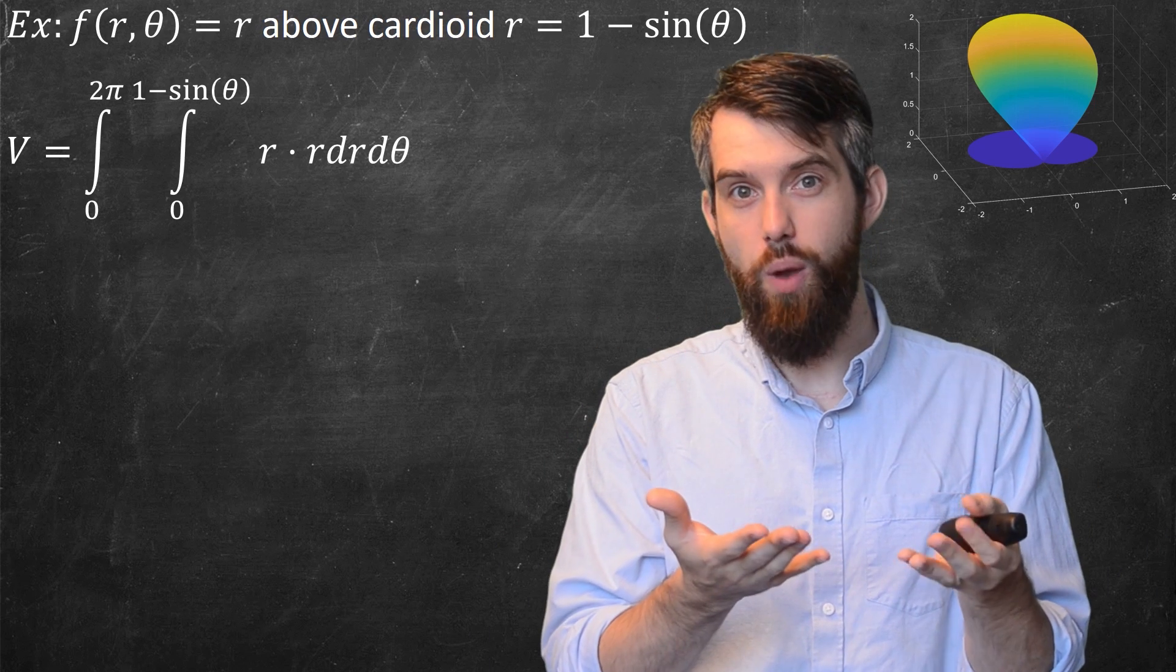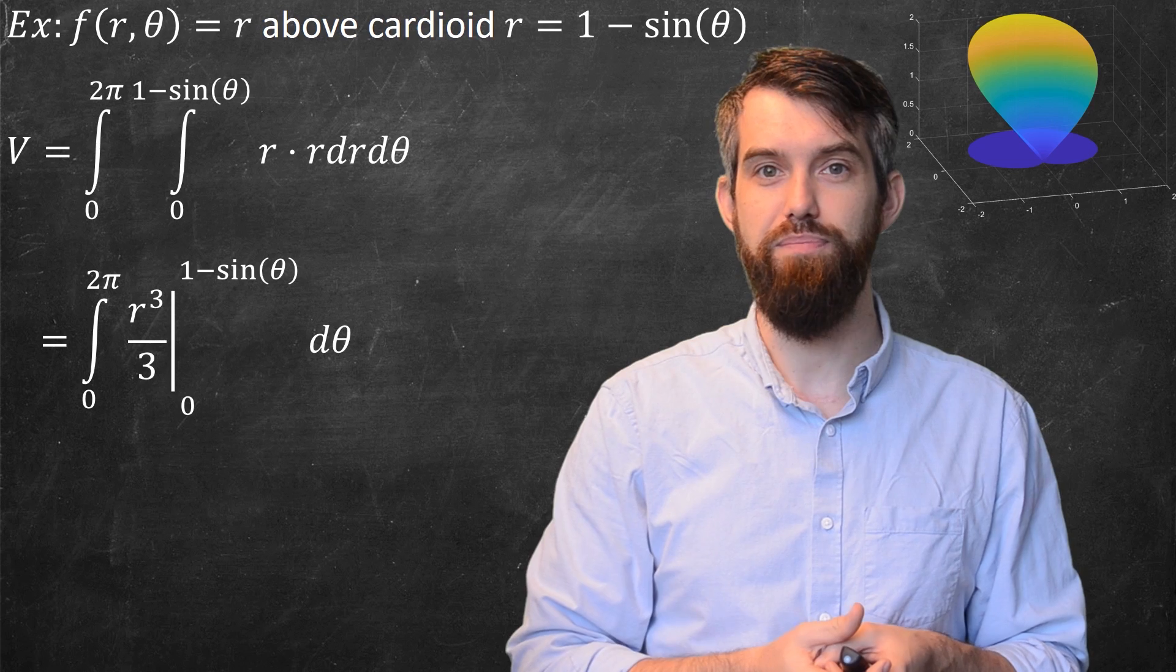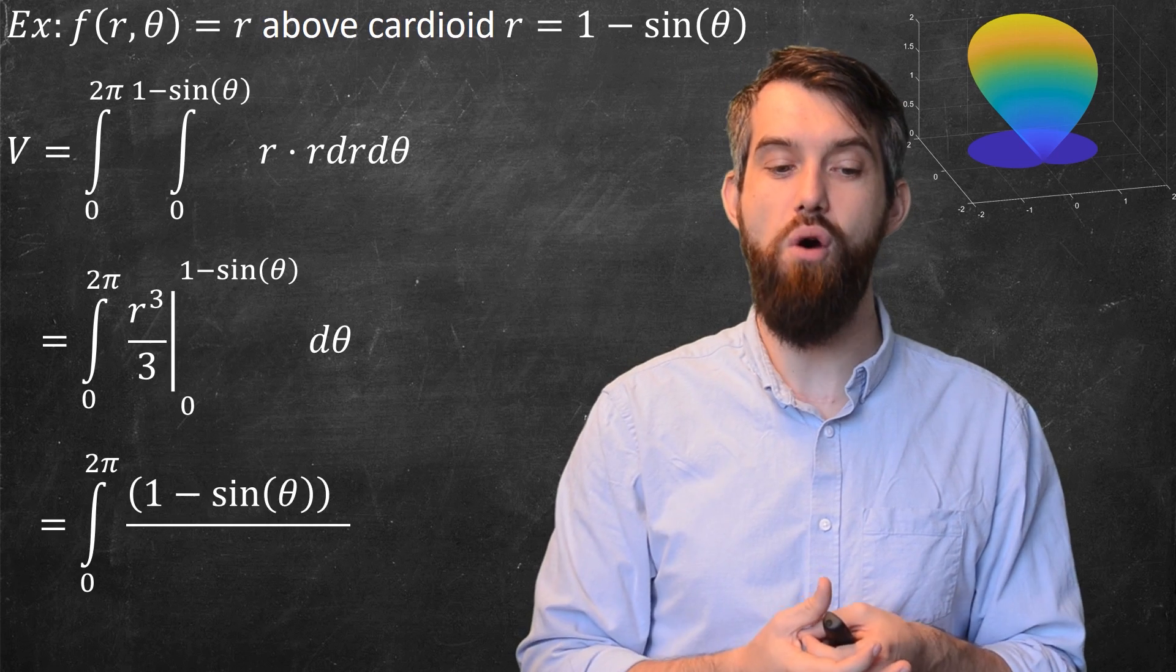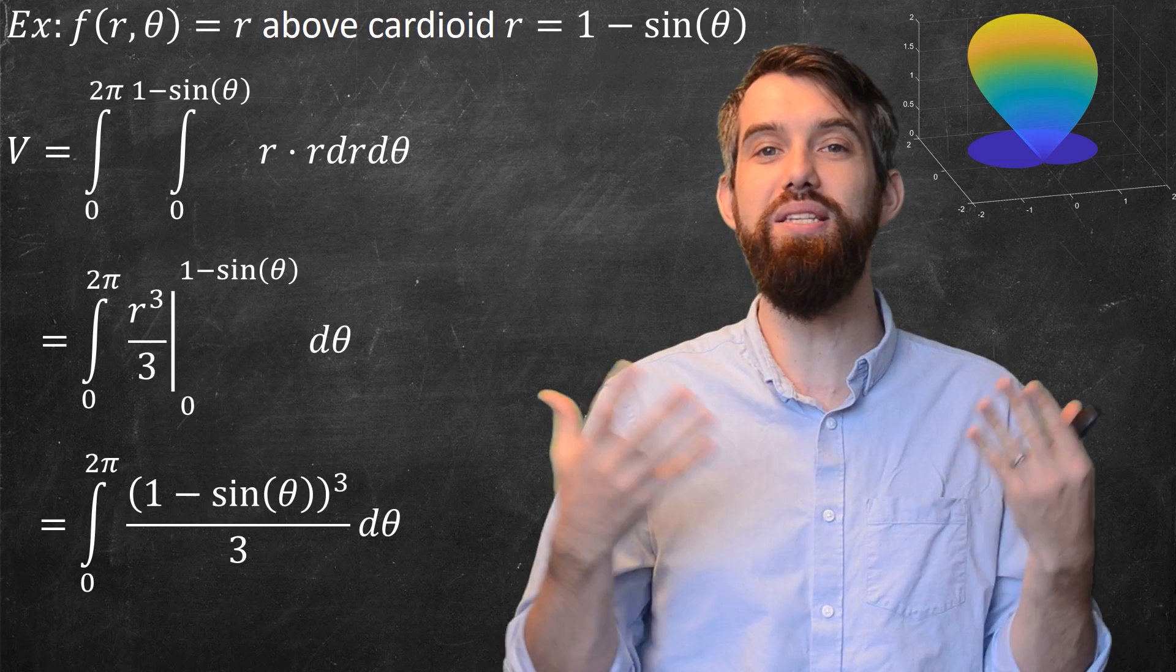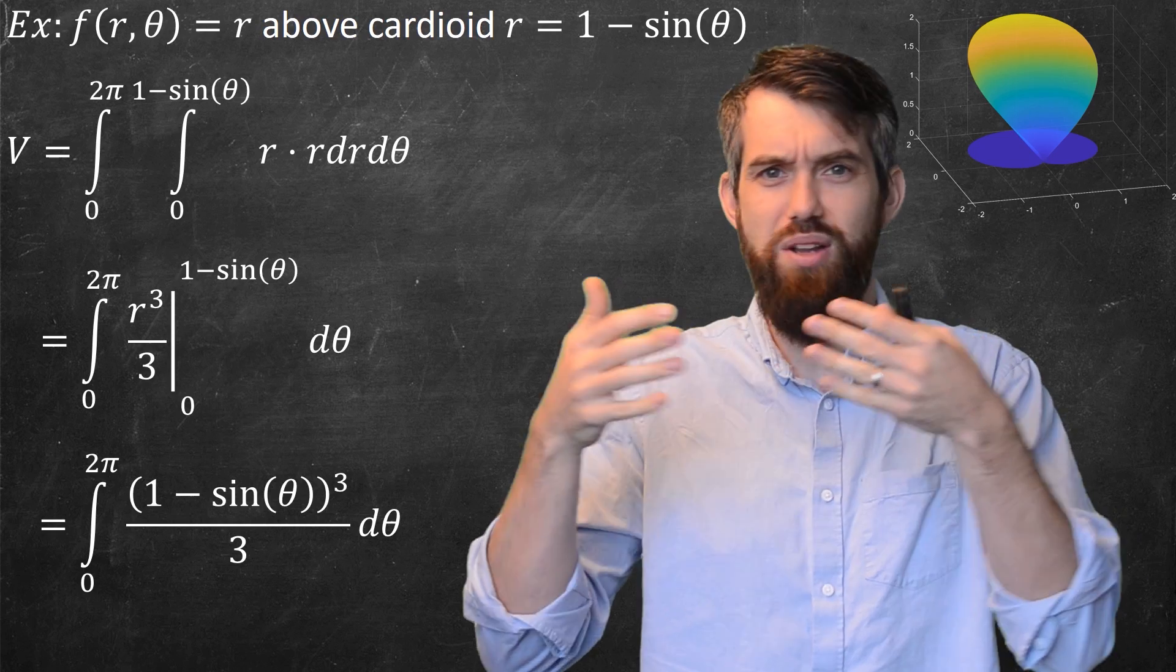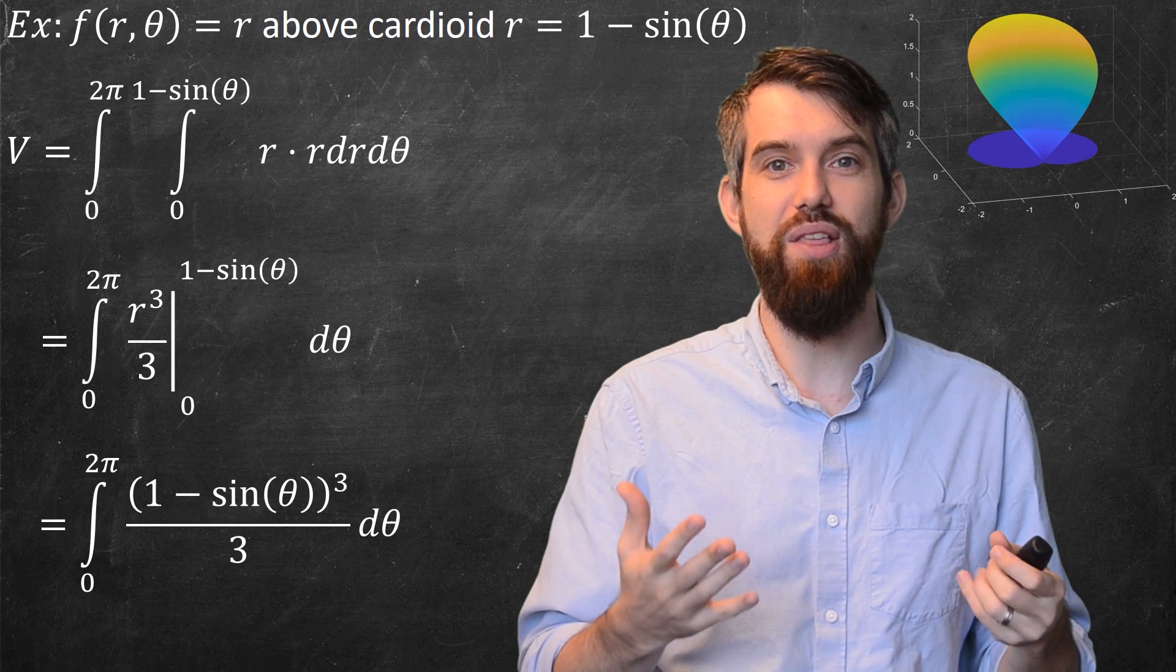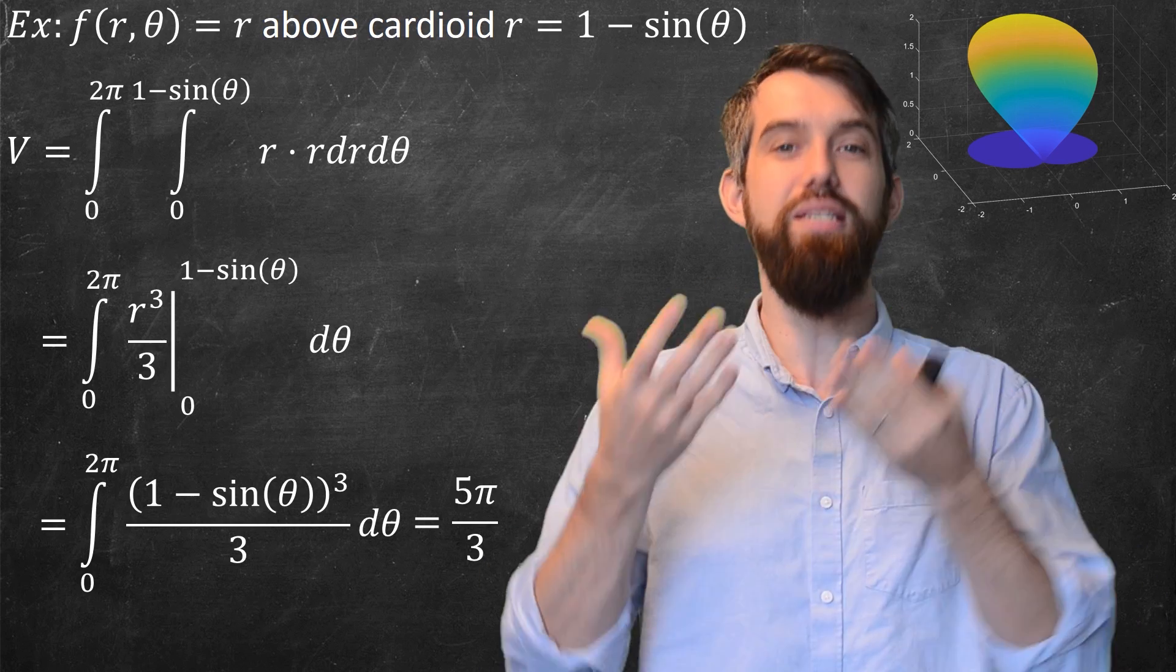If I take that integrand, the r squared, and I integrate it, you're just going to have an r cubed over 3. And from that you want to plug in the 1 minus sin theta and the 0. This is going to just give me the integral now that's entirely in terms of theta between 0 and 2π of this (1 minus sin theta) cubed divided out by 3. If you want to play around with expanding this out and doing the integral of those trig functions, power to you, you can do that after this video. Nevertheless, the answer to this just happens to be 5π/3.